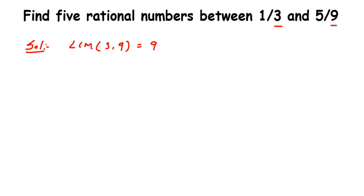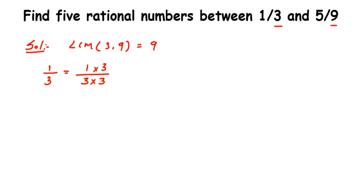Now I'm going to find the equivalent rational number of 1 by 3 and 5 by 9. For 5 by 9, it's not required because the denominator is already 9. For 1 by 3, we need to find its equivalent rational number where the denominator should be 9. To get 9 in the denominator, I multiply 3 by 3, and I must also multiply the numerator by 3. So 1 by 3 equals 3 by 9.